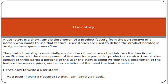The agile framework means we develop software using an iterative approach — not developing the project in one go, but on an iteration basis. In the first iteration we deliver five tasks, in the second iteration the next five tasks, and so on. The product backlog, which is essentially a scope document containing all customer requirements, is a collection of user stories. A user story is a functional requirement that informs the functional specification and development of features for a product or service. User stories consist of three parts: a persona of the user the story is written for, a description of the feature required, and an explanation of the need for that feature.